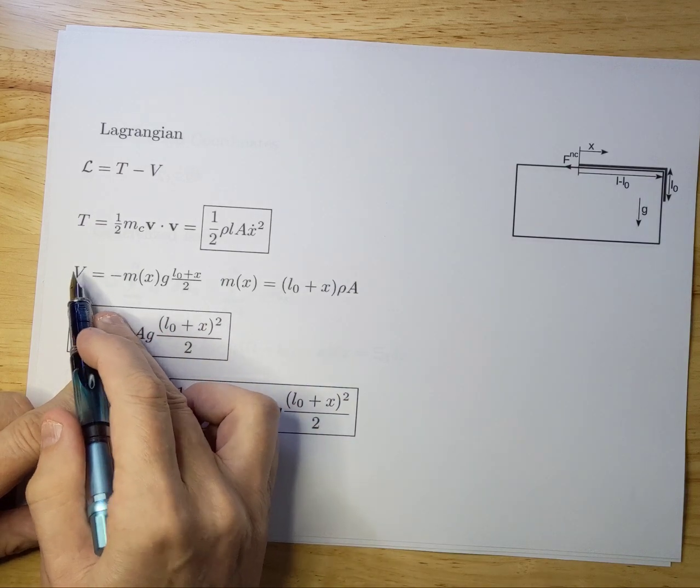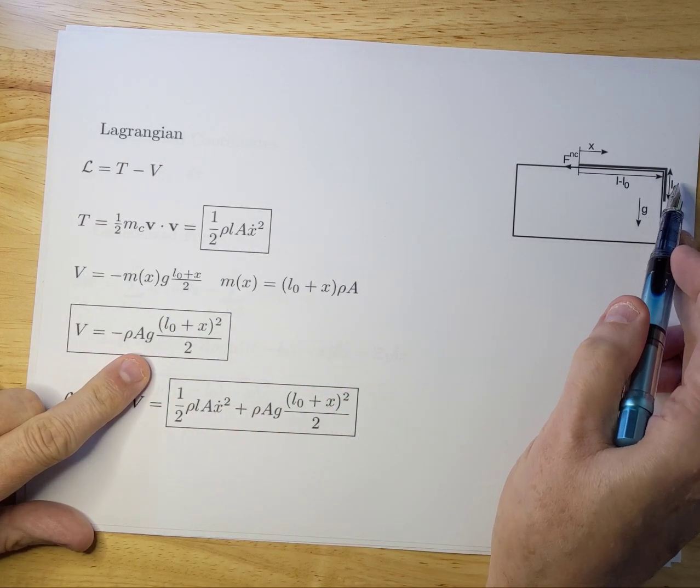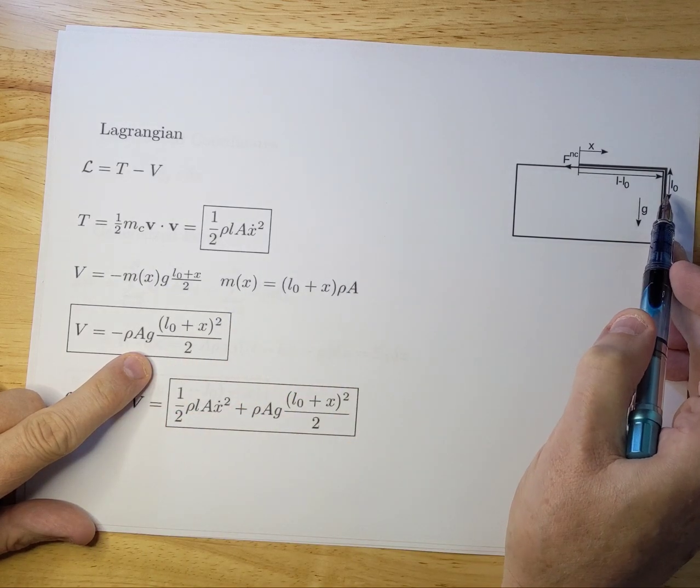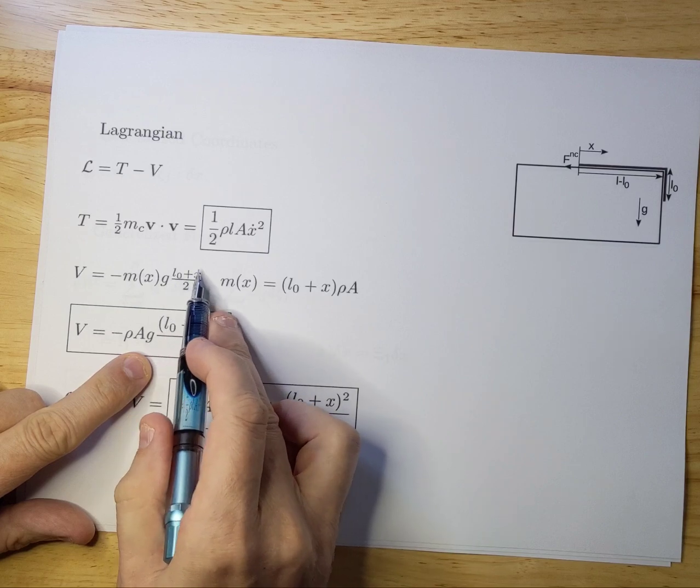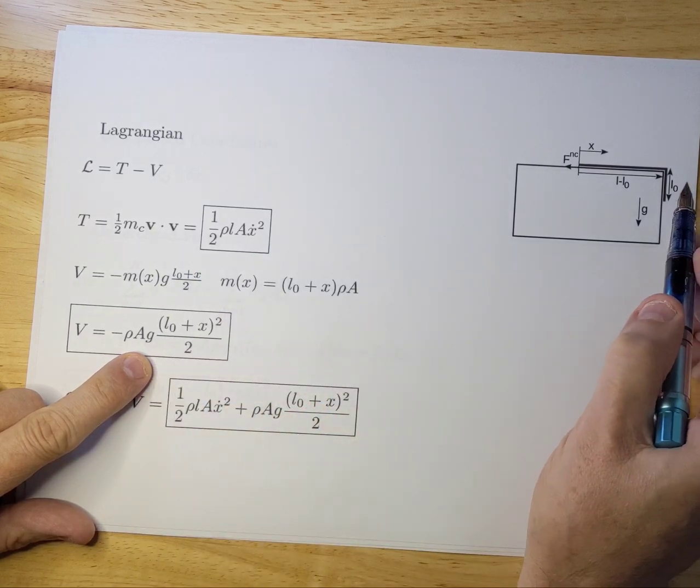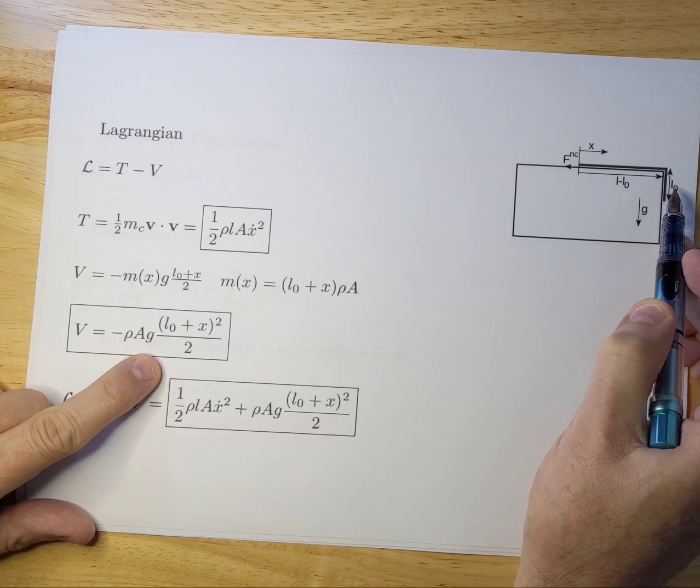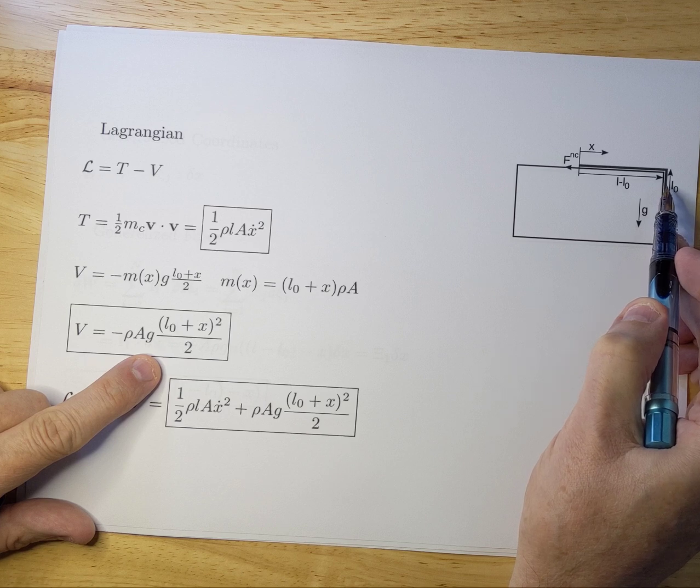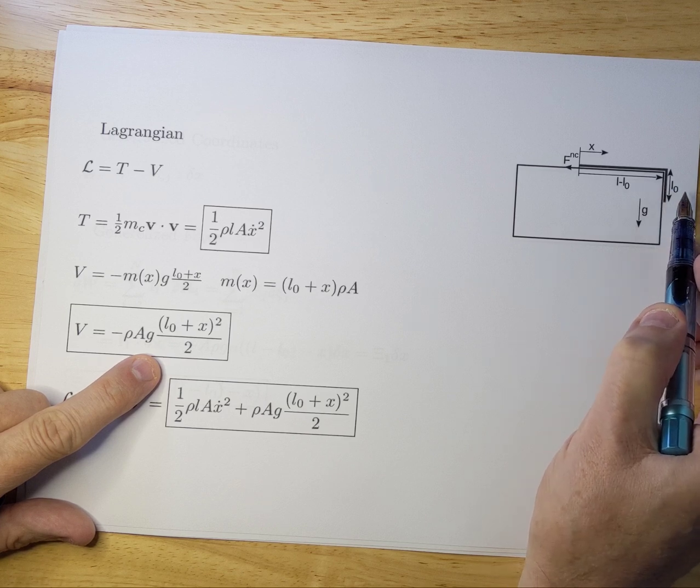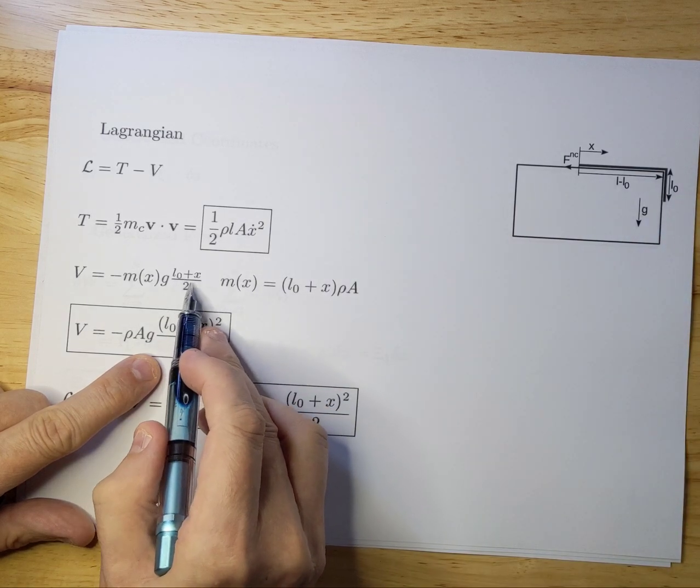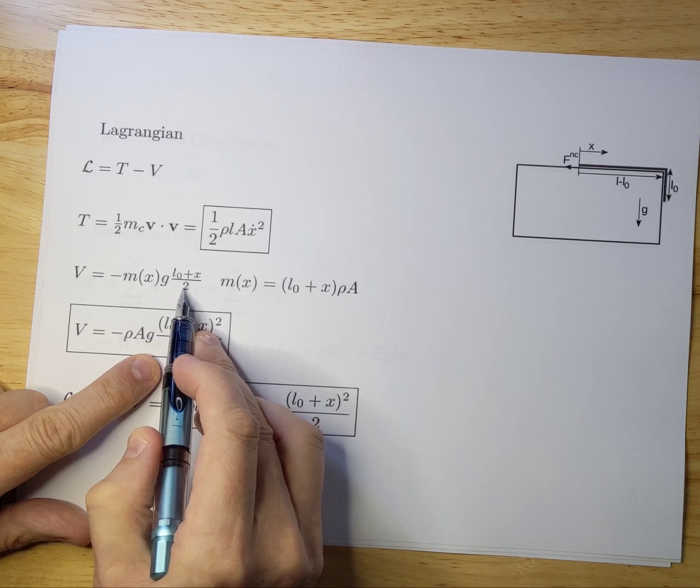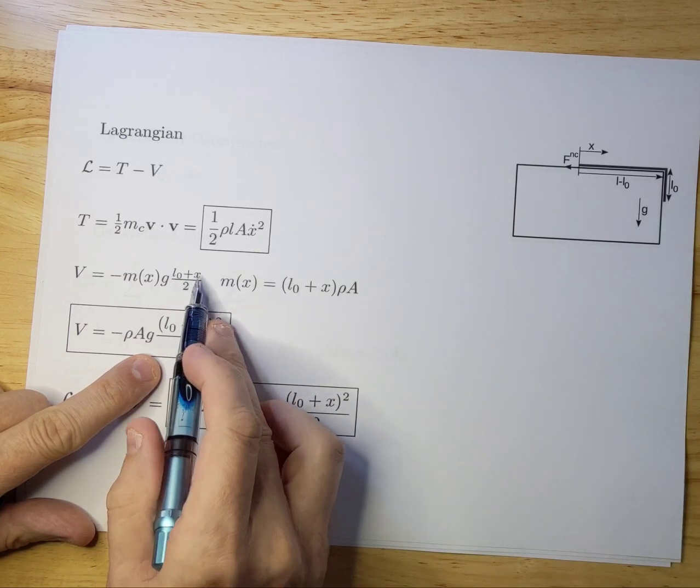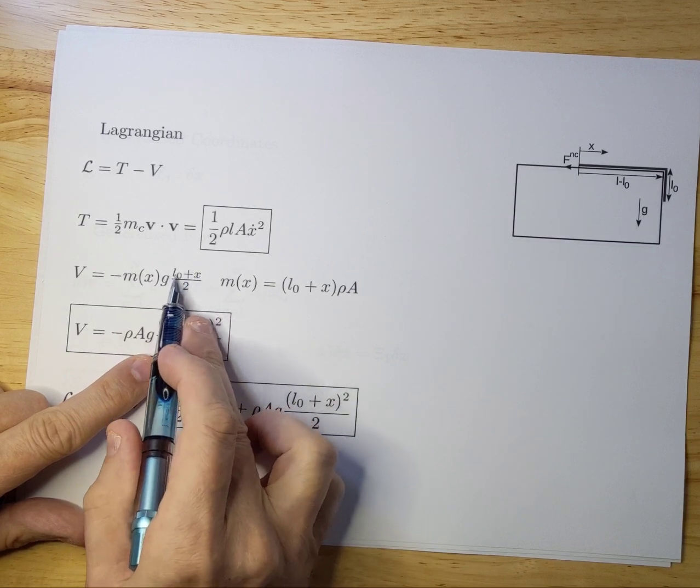Now let's take a look at the potential. The potential energy is essentially the amount, it's M, which again depends on X, times G, times the height that the potential energy will move. Now this is somewhat tricky, but you have to look at the center of mass here. And the center of mass, when X equals zero, is essentially L zero over two. So that's where the center of mass is. So if you then look how much it will move, if it moves X in addition to the L zero, it's essentially L zero plus X divided by two. Because the center of mass moves by a division of a factor of two and not just L zero plus X. It's only half of that that it moves.